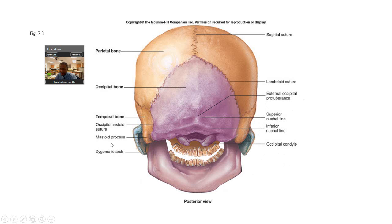With the next couple of slides, we'll add in bone markings — protrusions, foramen, and processes. This is actually the zygomatic arch. On the occipital bone, you can see the occipital condyle and the external occipital protuberance. If I point here, I'm thinking occipital bone.